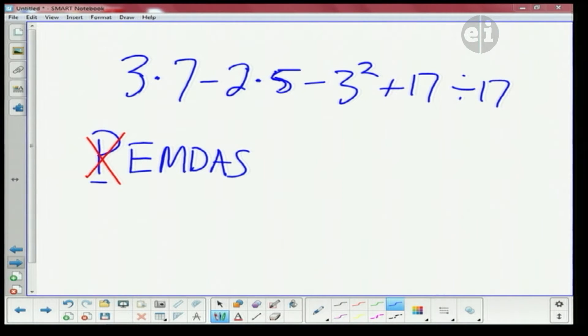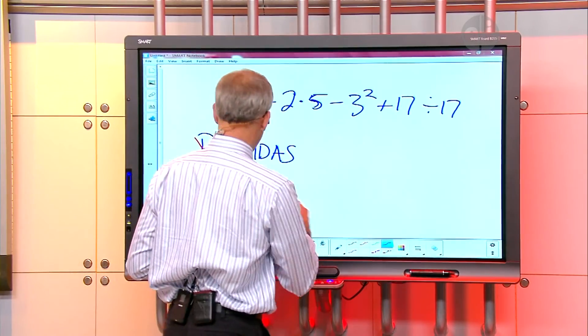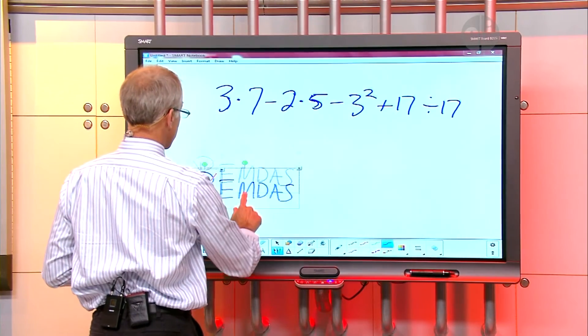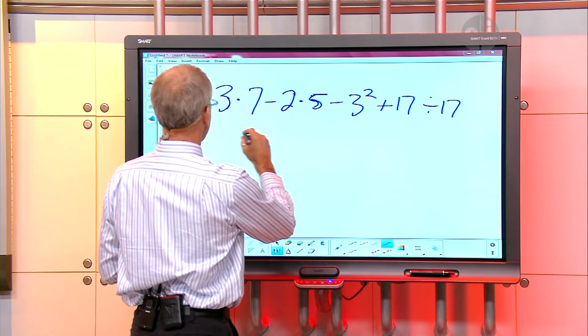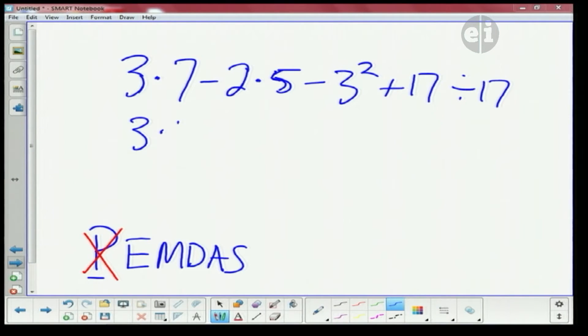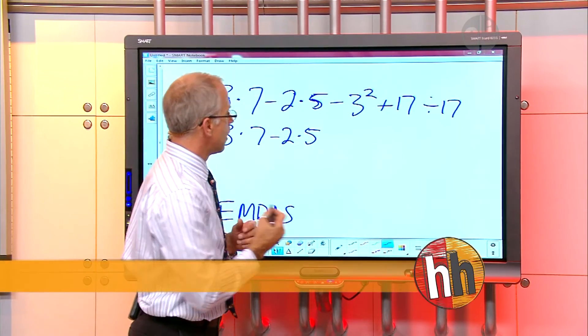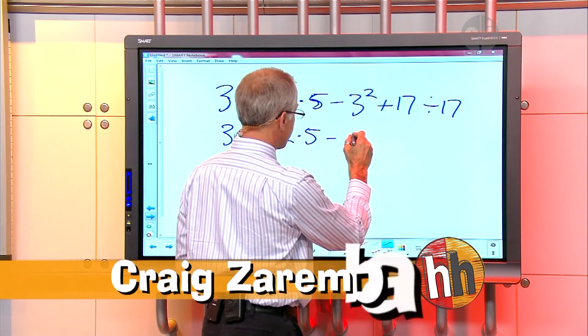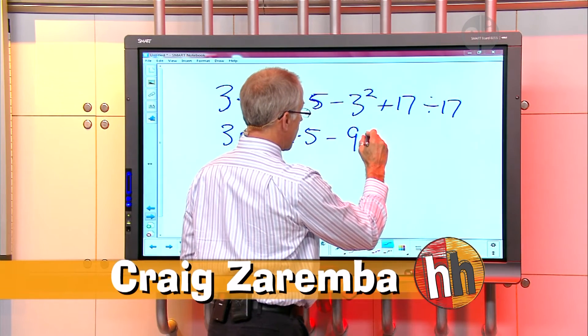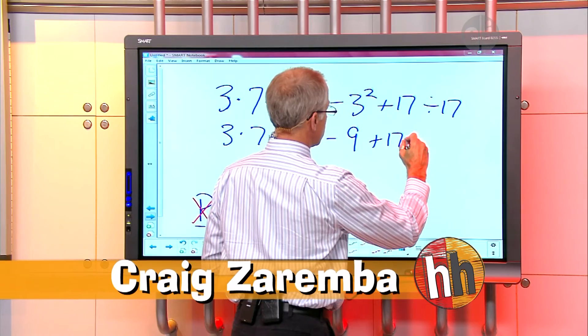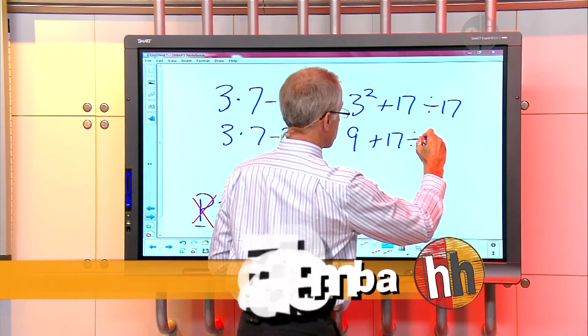Okay, do we have any exponents? Just a 3 squared. Alright, so let's go ahead and do that and I'm going to actually block this off and move this down here so we got some space. Okay, so I got 3 times 7 minus 2 times 5. Alright, what's 3 times 3? 3 squared is 3 times 3, correct? Alright, and I'm going to carry the 9 in front, minus 9 plus 17 divided by 17. Okay.